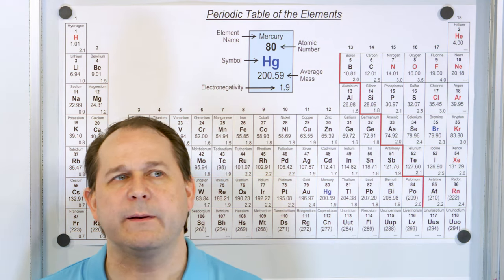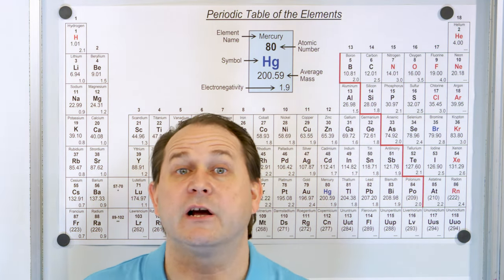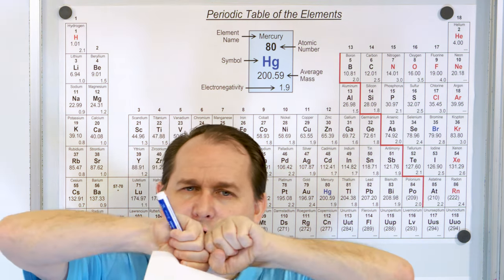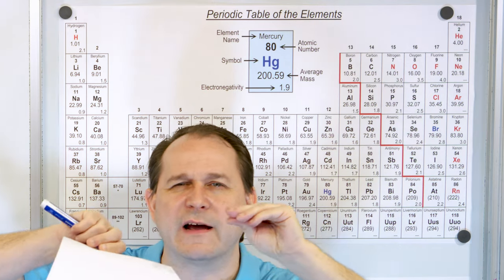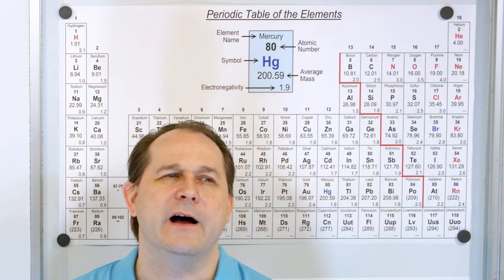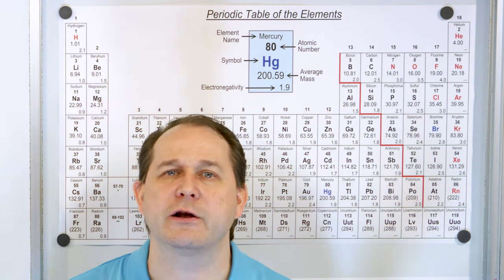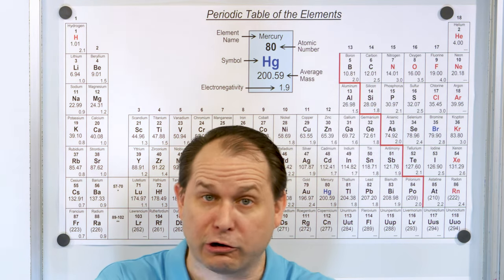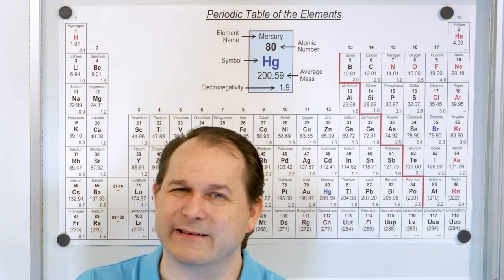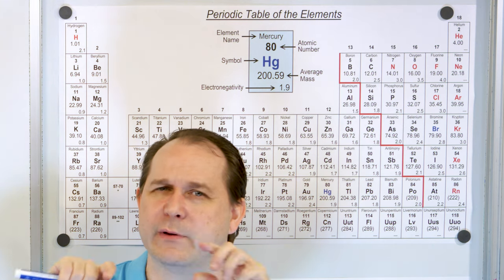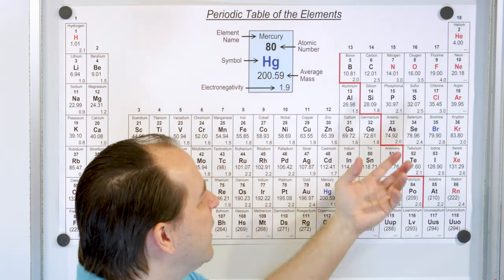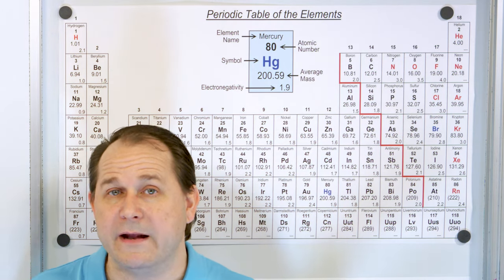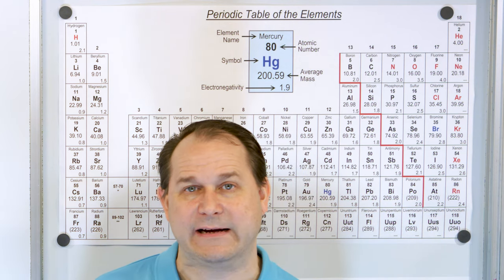When you think about metals, you think about something that conducts electricity, conducts heat very well, and is ductile — meaning you can pull it into a wire. When you think about non-metals, you think about something brittle like carbon — like charcoal or graphite, which just breaks and can't be drawn into a wire. Things like oxygen and nitrogen are gases, so of course they're not metals. Those are the characters of the elements on the right side of the table.